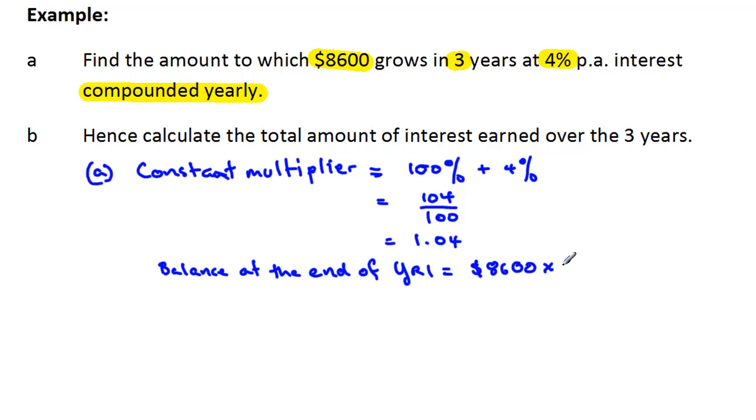And we're going to times it by our multiplier. That means that we're going to have our $8,600 plus the 4% interest. And in this case, it comes out to be $8,944.